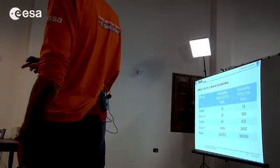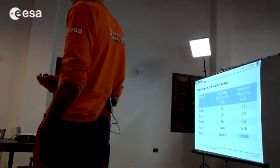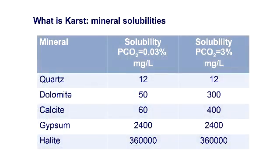Gypsum is much more soluble; CO2 doesn't have an effect on it, and the same goes for salt. So we have very easily formed gypsum and halite karst. Halite is very fast — one rainfall can make a cave in the time of one year. Gypsum works on the timescale of a human life: in about 50 years, we can have a cave large enough for a person to enter. In calcite and dolomite, we need at least a couple of centuries — a thousand years at least, sometimes much more, depending on rainfall and CO2.